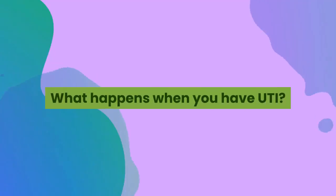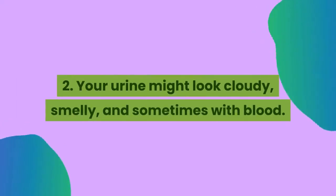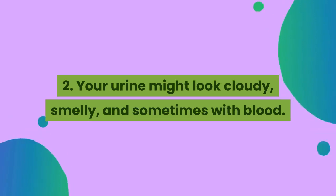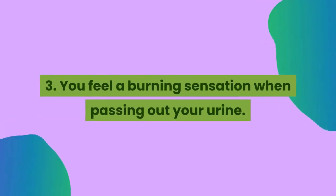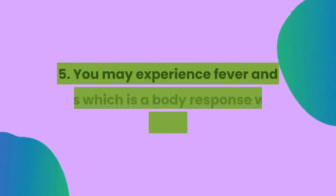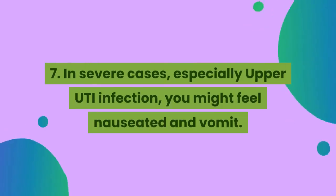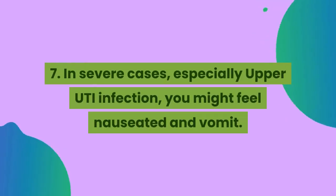What happens when you have UTI? 1. You want to pee frequently but with little urine. 2. Your urine might look cloudy, smelly, and sometimes with blood. 3. You feel a burning sensation when passing out your urine. 4. You might have muscle pain and back pain due to the inflammation process of the body. 5. You may experience fever and chills, which is a body response when having an infection. In severe cases, especially upper UTI infection, you might feel nauseated and vomit.